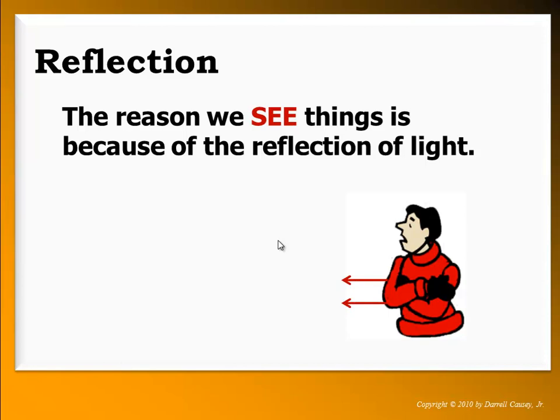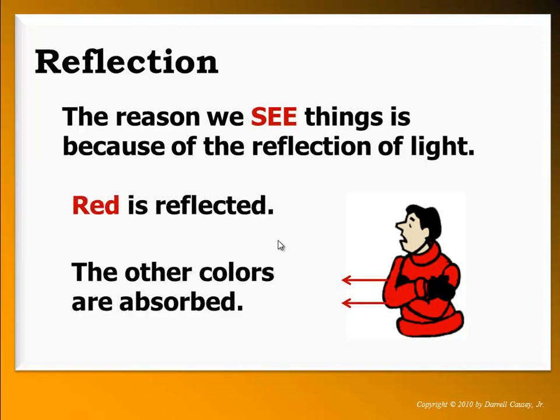We see the color of a red sweater because red is reflected and all the other colors are absorbed. That's also why we call red a hot color — red is being reflected and is very low in energy, while colors like blue are being absorbed.